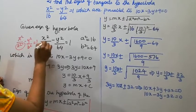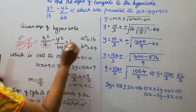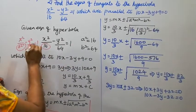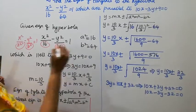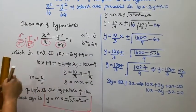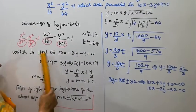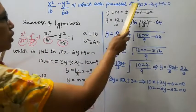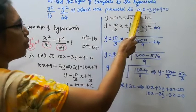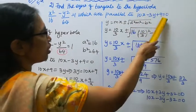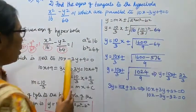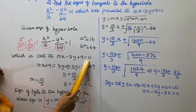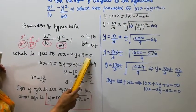From the given equation of the hyperbola, a² is 16 and b² is 64. The line which is parallel to the tangent is the given equation 10x minus 3y plus 9 equal to 0.